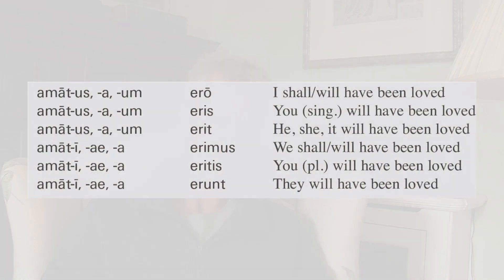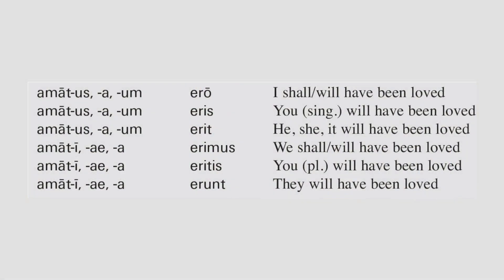So the future perfect passive of amo goes: amatus ero, amatus eris, amatus erit, amati erimus, amati eritis, amati erunt. What could be easier than that?